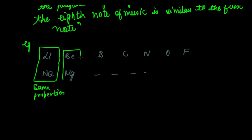Same is the case with beryllium and magnesium — again, same properties. So if you take lithium as the first element, sodium will come out to be the eighth element. So the first and eighth element have the same properties. Similarly, if you take beryllium as the first element, then magnesium will be the eighth element — beryllium has two valence electrons, magnesium also has two valence electrons, that is electrons in the outermost shell of the atom.